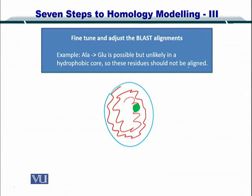You have performed multiple sequence alignment between all the proteins and arrived at proteins which are similar to the sequence of the protein whose structure you want to determine. If you already have an alignment from BLAST, you would want to fine-tune this alignment. Fine-tuning means that residues such as alanine which are replaceable by glutamine, but such a replacement cannot occur if the alanine amino acid is in the hydrophobic core.